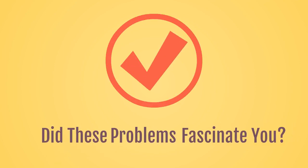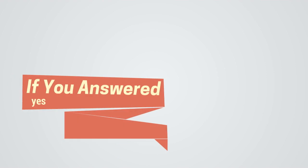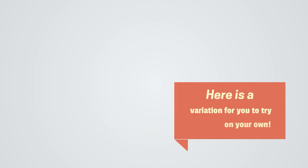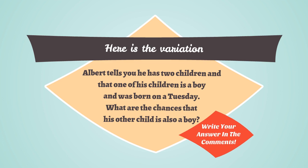Did these problems fascinate you? If you answered yes, here is a variation for you to try on your own. Here is the variation. Albert tells you he has two children and that one of his children is a boy and was born on a Tuesday. What are the chances that his other child is also a boy? Write your answers in the comments below.